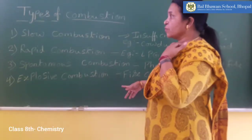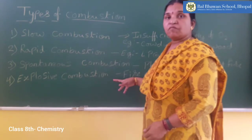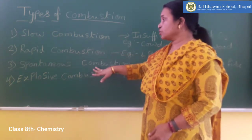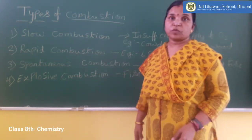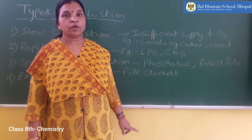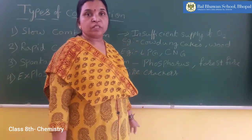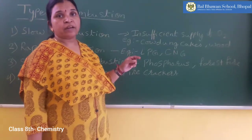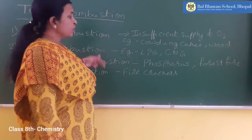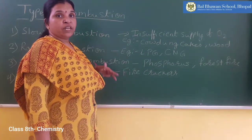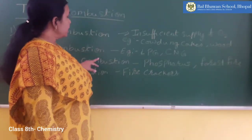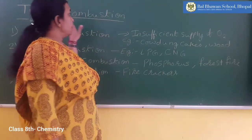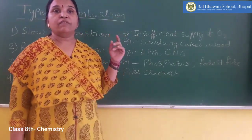So these are the four types of combustion. There are many more examples which we see in our day-to-day life related to slow, rapid, spontaneous, or explosive combustion. In your book on page number 70, the different types of combustion and their examples are given. Kindly read that part and try to understand the differences between these four types. In our next class we will be discussing those differences, and any doubts related to these types of combustion will also be addressed.